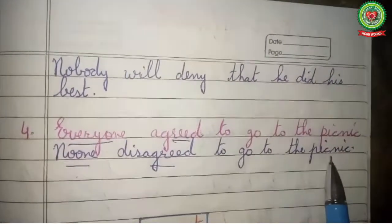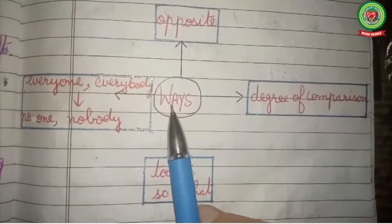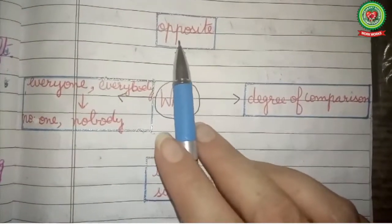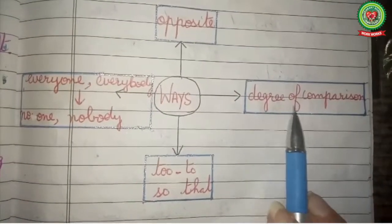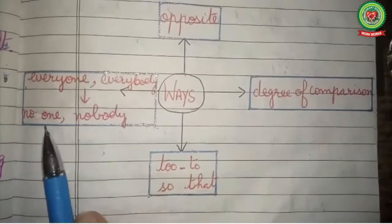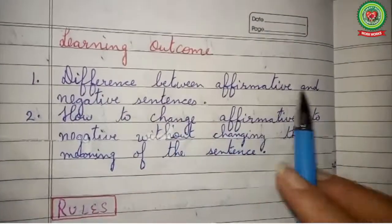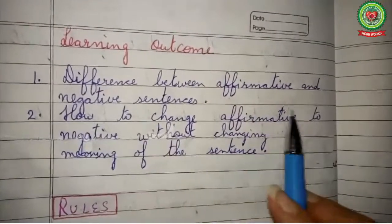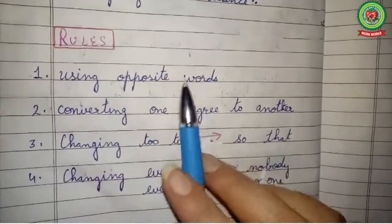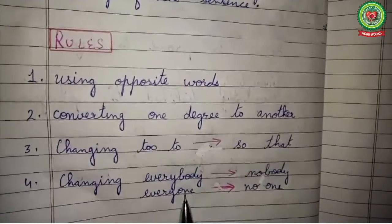Let's recollect what we have learned from this flowchart. There are four ways to change affirmative into negative sentences without changing the meaning: first, by changing to opposite words; second, by changing the degree of comparison; third, by changing 'too...to' into 'so...that'; and fourth, by changing 'everyone/everybody' to 'no one/nobody.' Today we learned the difference between affirmative and negative sentences and the rules for converting one to the other.